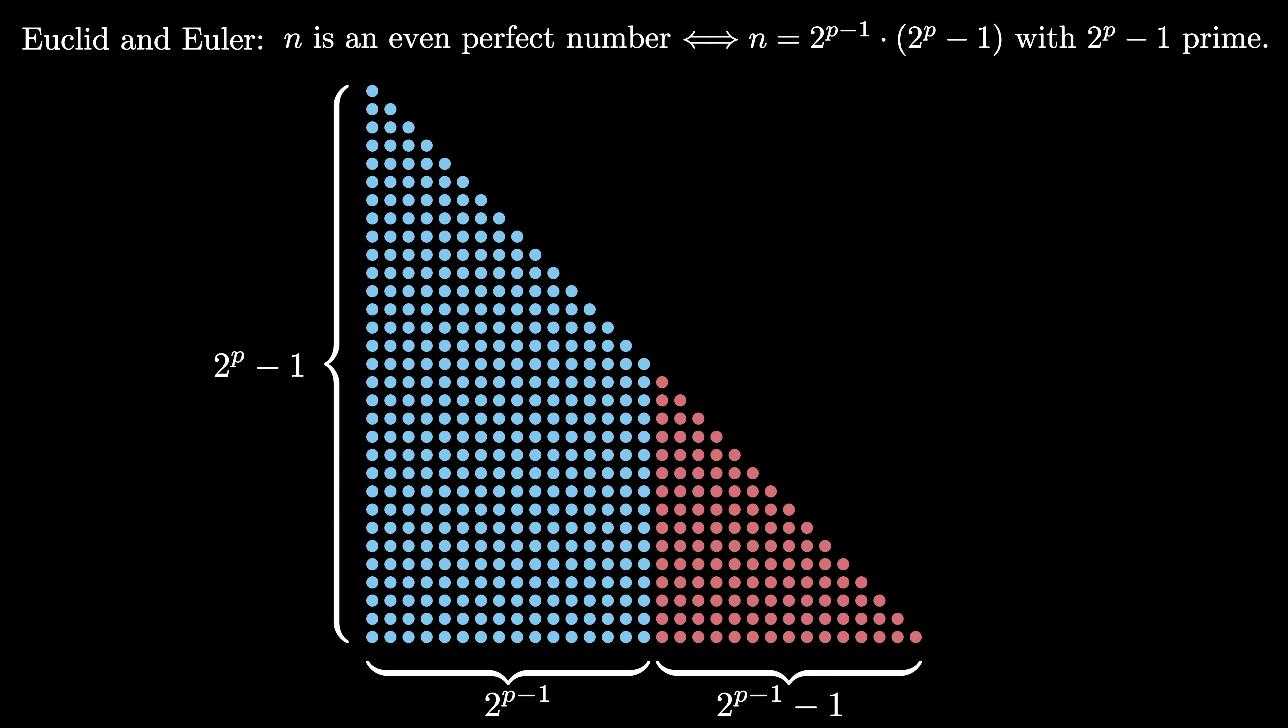In this case, the base of the new triangular array is 2 to the p minus 1 plus 2 to the p minus 1 minus 1, which simplifies to 2 to the p minus 1.